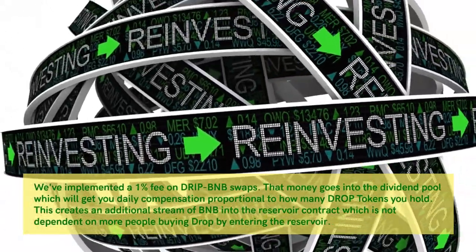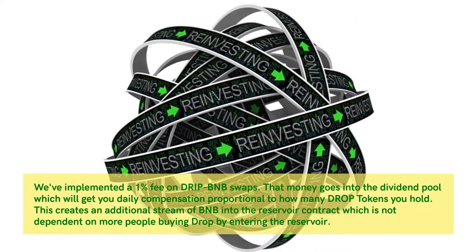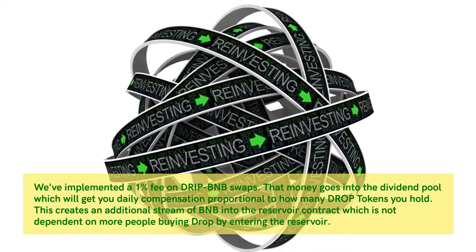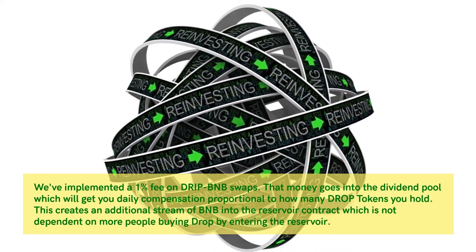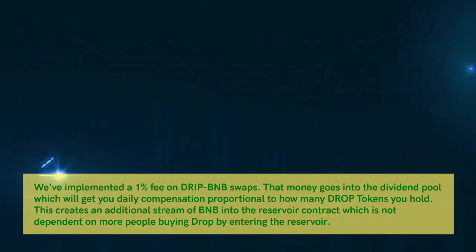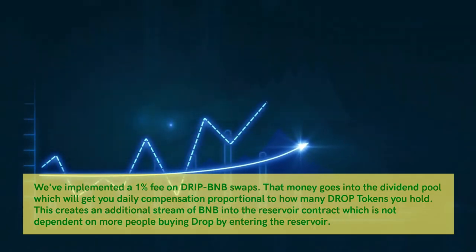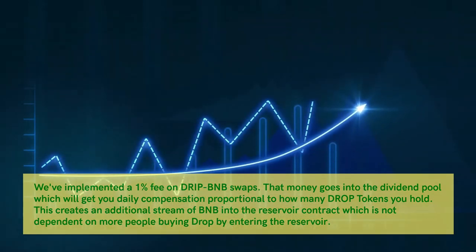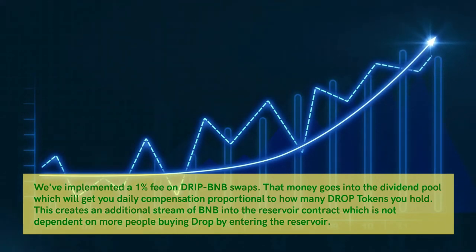A 1% fee has been implemented on DRIP/BNB swaps. That money goes into the dividend pool, giving you daily compensation proportional to how many DROP tokens you hold. This creates an additional stream of BNB into the Reservoir contract that is not dependent on more people buying DROP by entering the Reservoir.